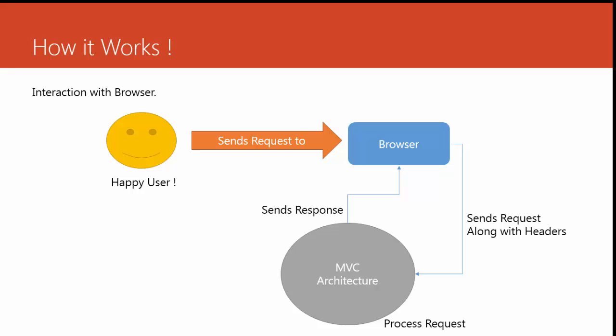How does MVC work? This is a general explanation that a fresher or a newcomer can understand. You are a happy user — you send a request to the browser. All requests, either using a URL or by clicking on any hyperlink, are forwarded by the browser along with headers to the MVC architecture. The header is the integral information about the browser or system you are using. It contains host information, which site you are accessing, client information, agent information such as what browser you are using, and so on. The request is sent along with the headers to the ASP.NET MVC architecture.